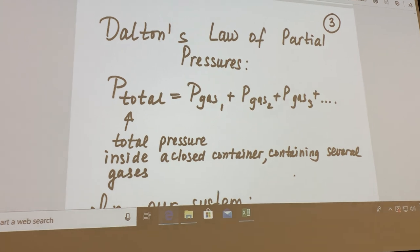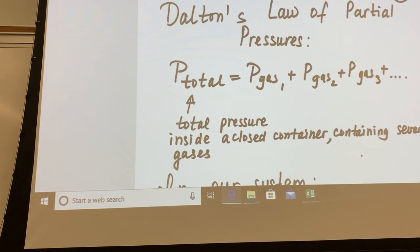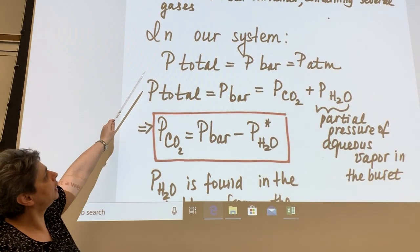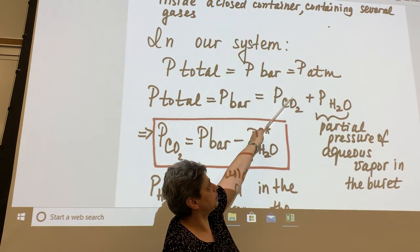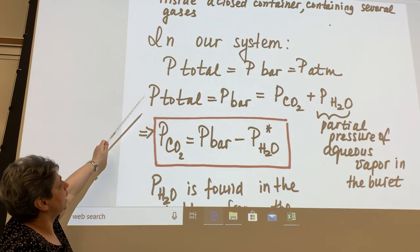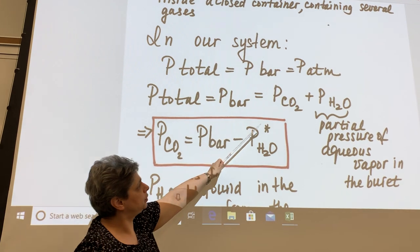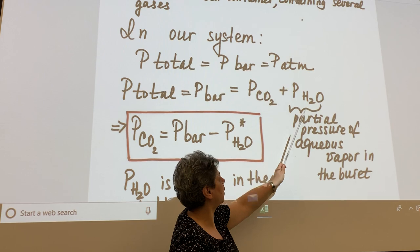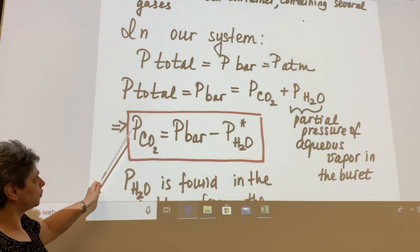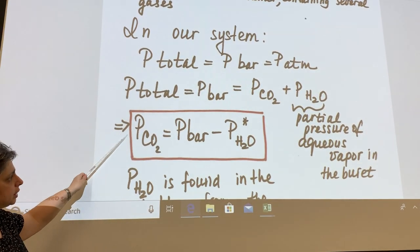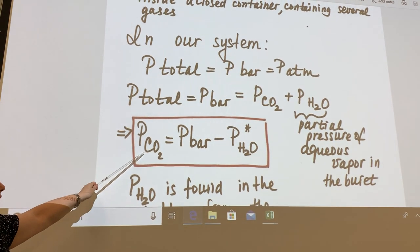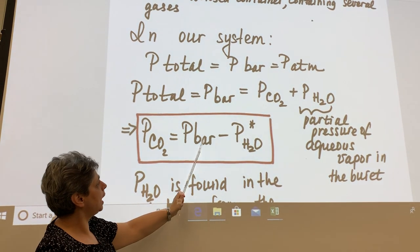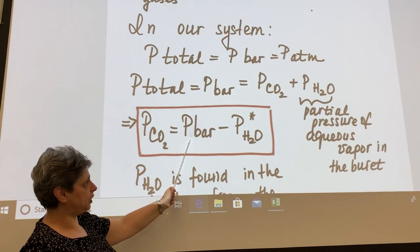For our system, we only have two gases to worry about as we discussed. So in our system, total pressure, because of the leveling bulb, is expected to be equal to barometric pressure or atmospheric pressure. And then this total pressure is going to be equal to partial pressure of CO2, plus partial pressure of aqueous vapor. And so pressure of CO2, partial pressure of just CO2, that is, must be found by difference by taking partial pressure of aqueous vapor and subtracting it from atmospheric or barometric pressure.